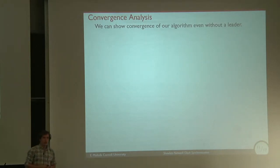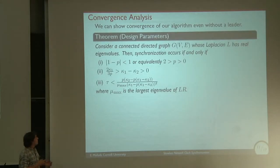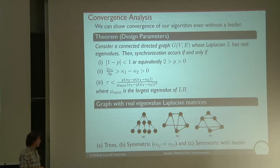We can analyze the convergence of this system. We can even show that this system converges even if there's no leader. We can map the parameter values with if and only if conditions for synchronization. The interesting one is the third condition where we have this τ value that was the updating time. It turns out that there is a bound on how slow you can update. This bound depends on the parameters of the system, but importantly depends on μₘₐₓ, which is an eigenvalue that depends on the topology of the network. Topology plays an important role of how often you can update.